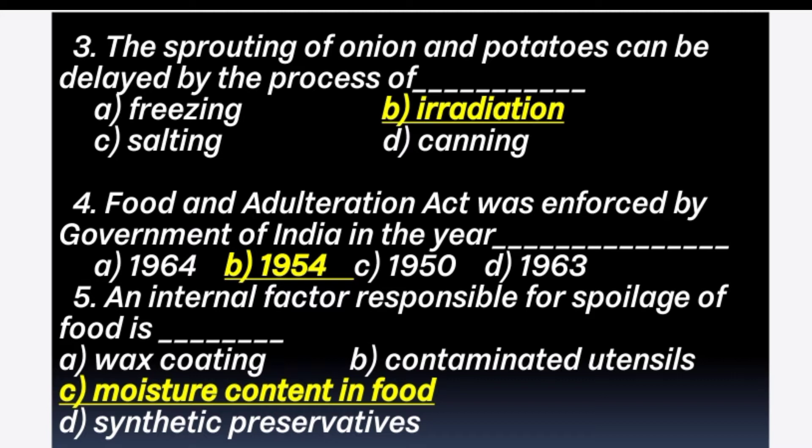4th question: Food Adulteration Act was enforced by the Government of India in the year — Answer is option B: 1954. 5th question: An internal factor responsible for spoilage of food is — Answer is option C: Moisture content in food.